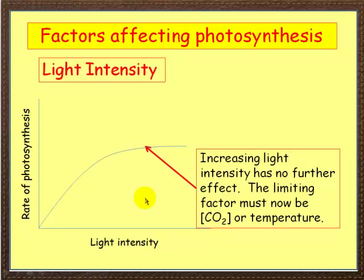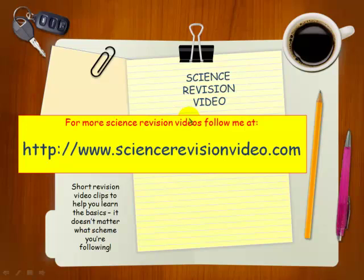Hope you've got that. If not, flick back through the three graphs and make sure you understand the profile of the graphs and also what the limiting factors are at each stage. So the three limiting factors are temperature, carbon dioxide concentration, and light intensity. Thank you for watching this video. For more free Science Vision videos, please go to my site at www.ScienceVisionVideo.com. Thanks for watching.